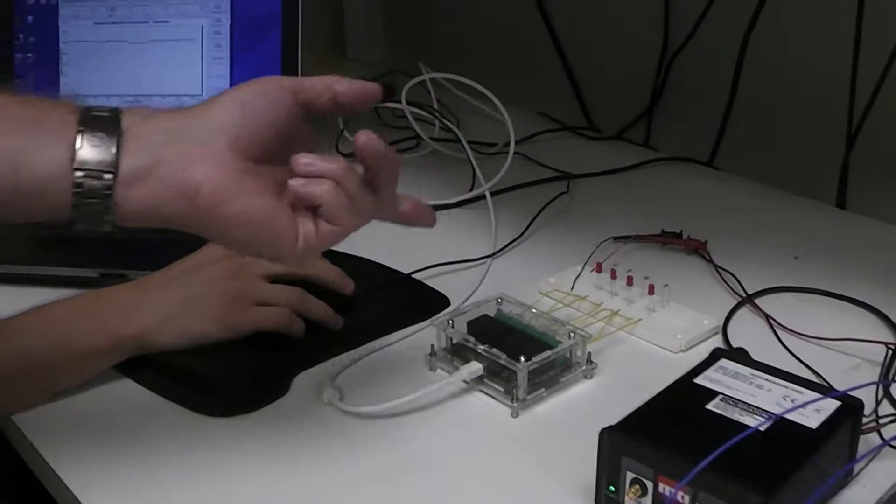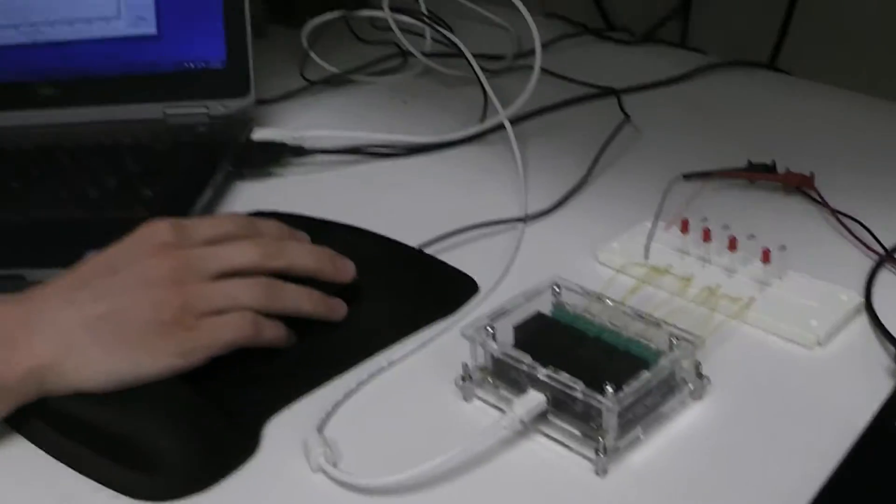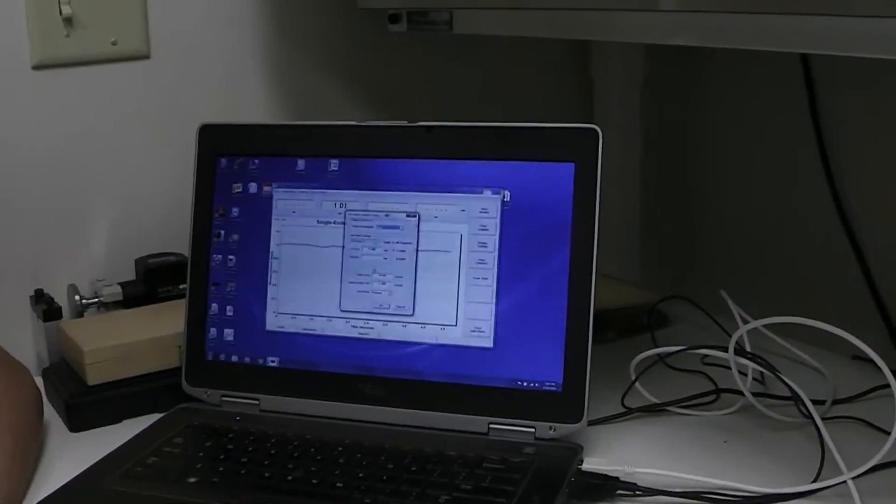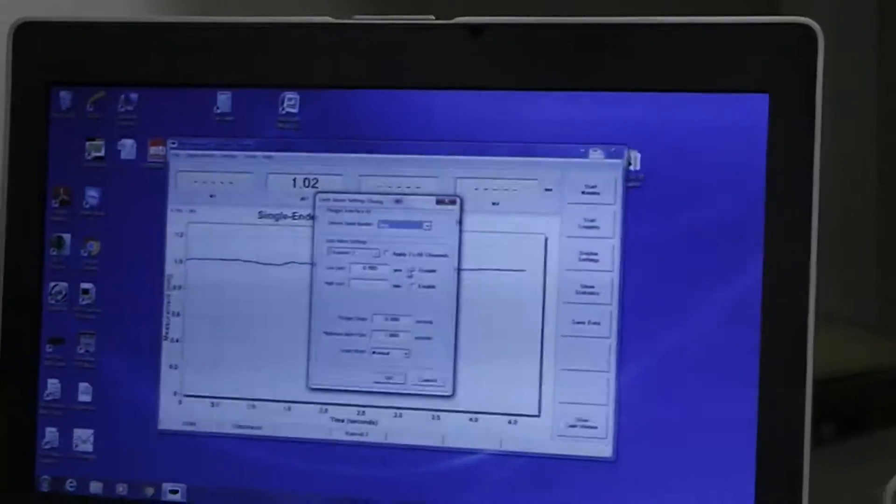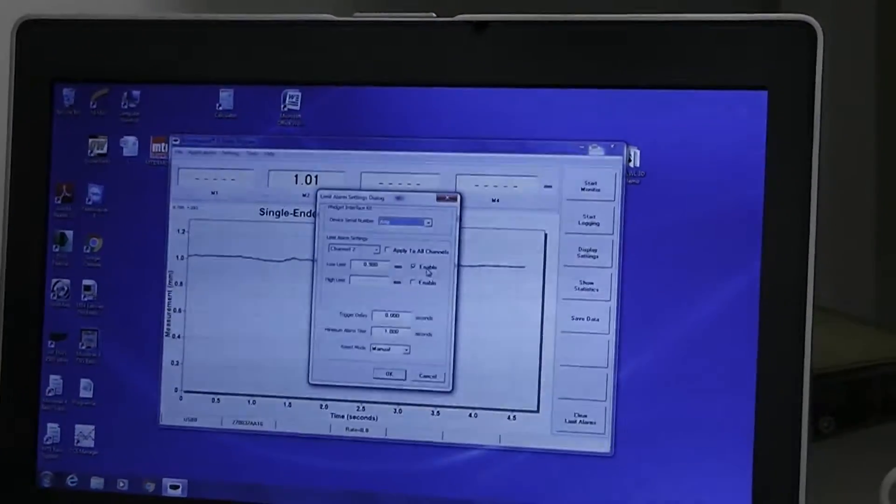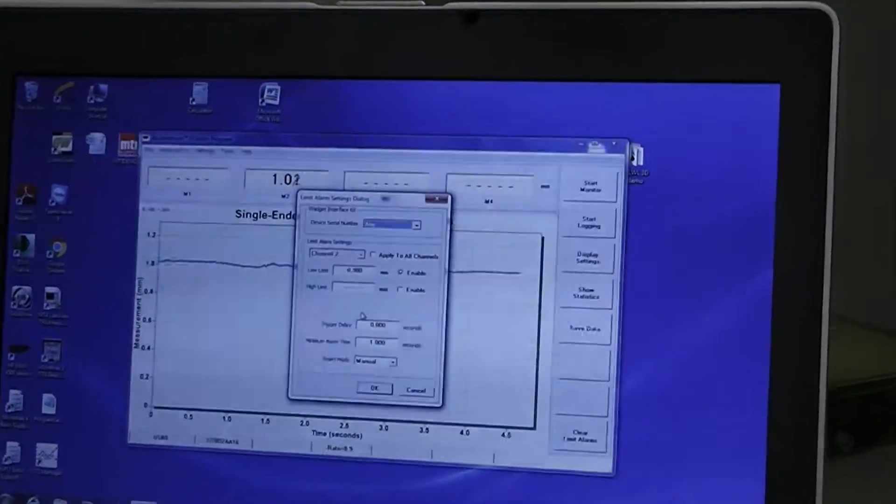And we've set the alarm down to, what was that, Isaac? 0.98 millimeters. Okay, we have it set to 0.89 millimeters, and what we want to do is see this trip.